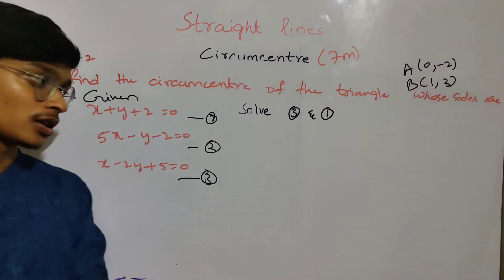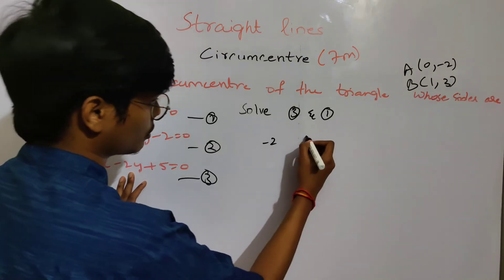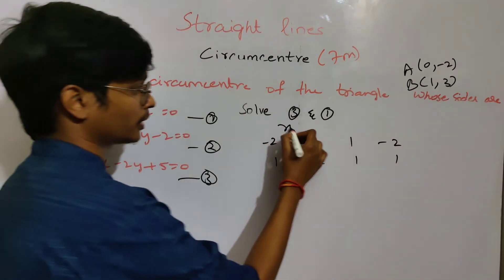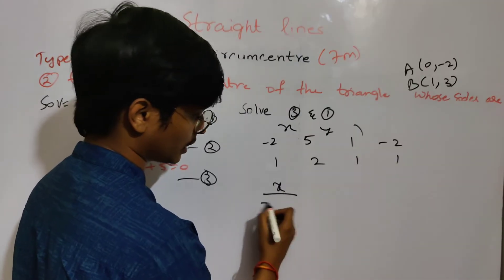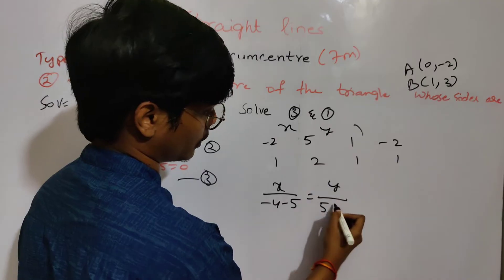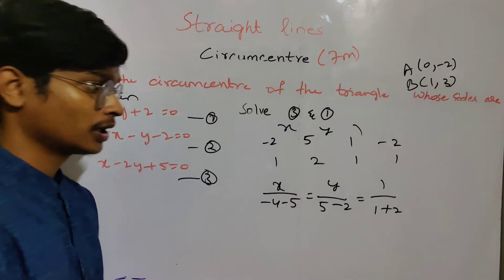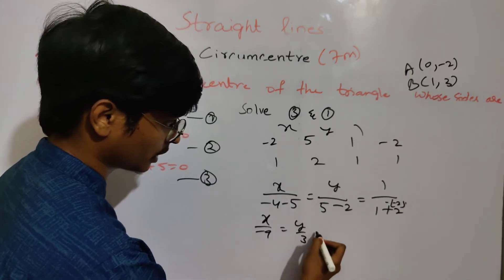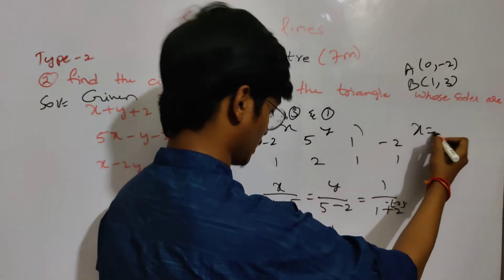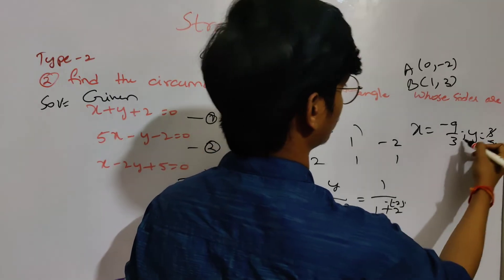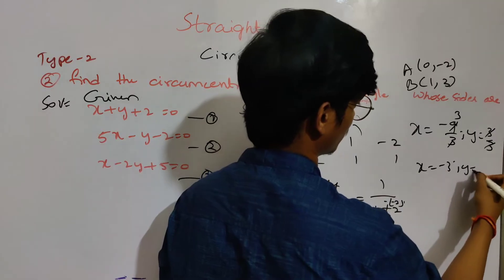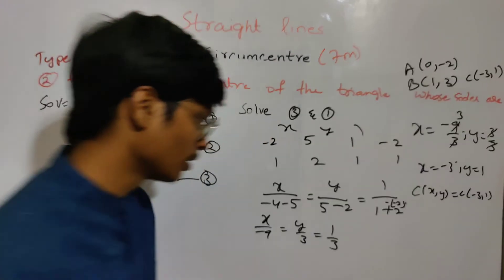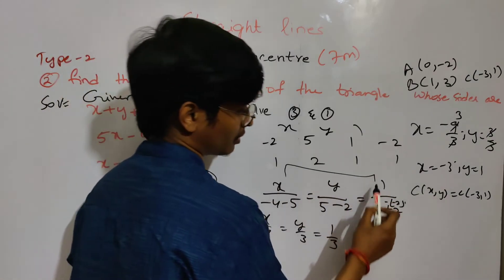My next: solve 3 and 1. C is solving. We need to make: minus 2, 5, 1, minus 2, 1, 1, 2, 1, 1, 1, 2, 1. So x y: x by AD minus BC, minus 4 minus 5. y by 5 minus 2, 1. By 1 plus 2. Now we will have minus of minus of minus of minus, plus 2. x by minus 9, y by 3, 1 by 3. Now x equals to minus 9 by 3, y equals to 3 by 3. x equals to minus 3, y equals to 1. C of x, y equals to C of minus 3, 1.